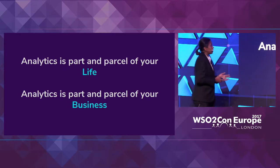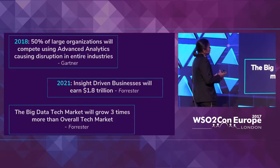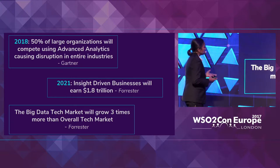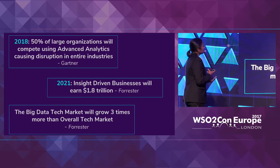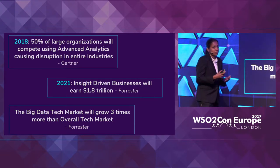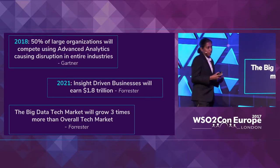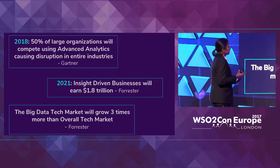Let's pause and check whether this is aligned with what the analysts have to say. Gartner says that in 2018, 50% of large organizations would compete using advanced analytics — not just operational analytics, but advanced analytics which includes insight-driven services. This is going to cause disruption in entire industries. Then Forrester predicts that in 2021, insight-driven businesses will earn $1.8 trillion.